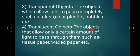Translucent objects: objects that allow only a certain amount of light to pass through them, such as tissue paper, wax paper, and various types of colored plastics also come under the category of translucent objects.